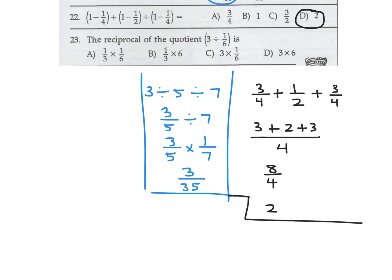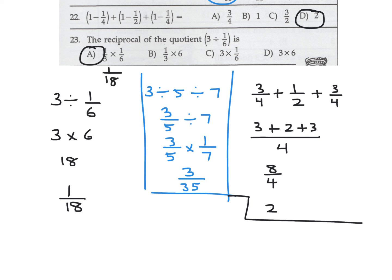The reciprocal of the quotient of 3 divided by (1/6). First, 3 divided by 1/6 equals 3 times 6, which is 18. The reciprocal of 18 is 1/18. Looking at the answer choices, the first one is 1/18, so number 23 is A.